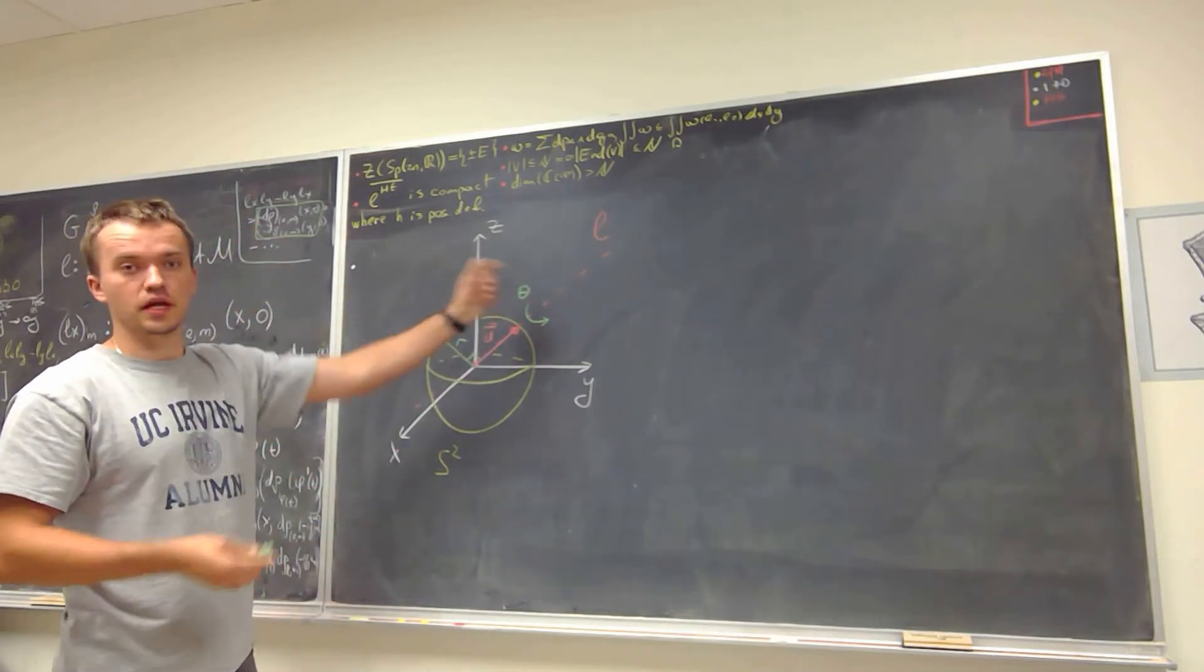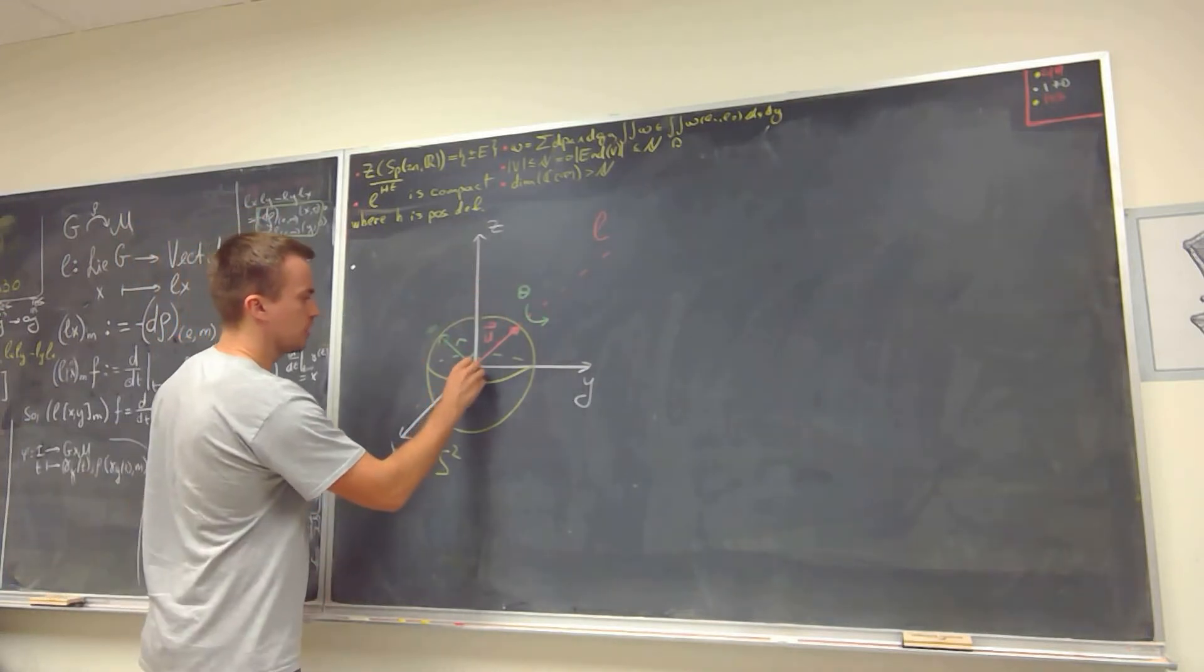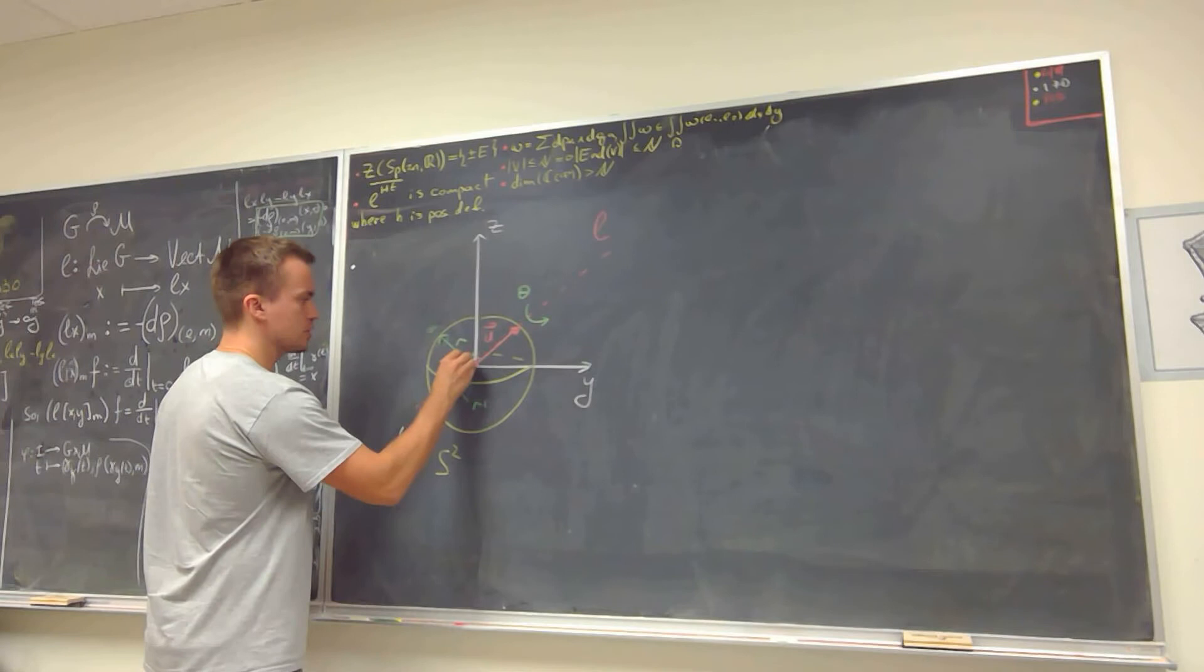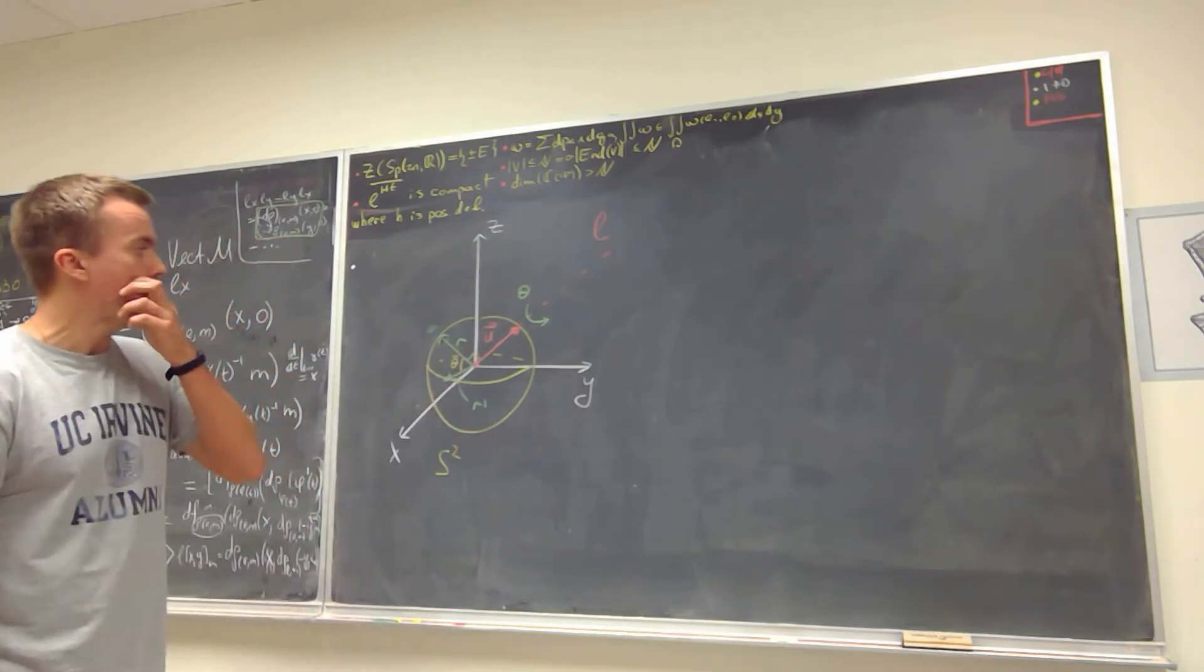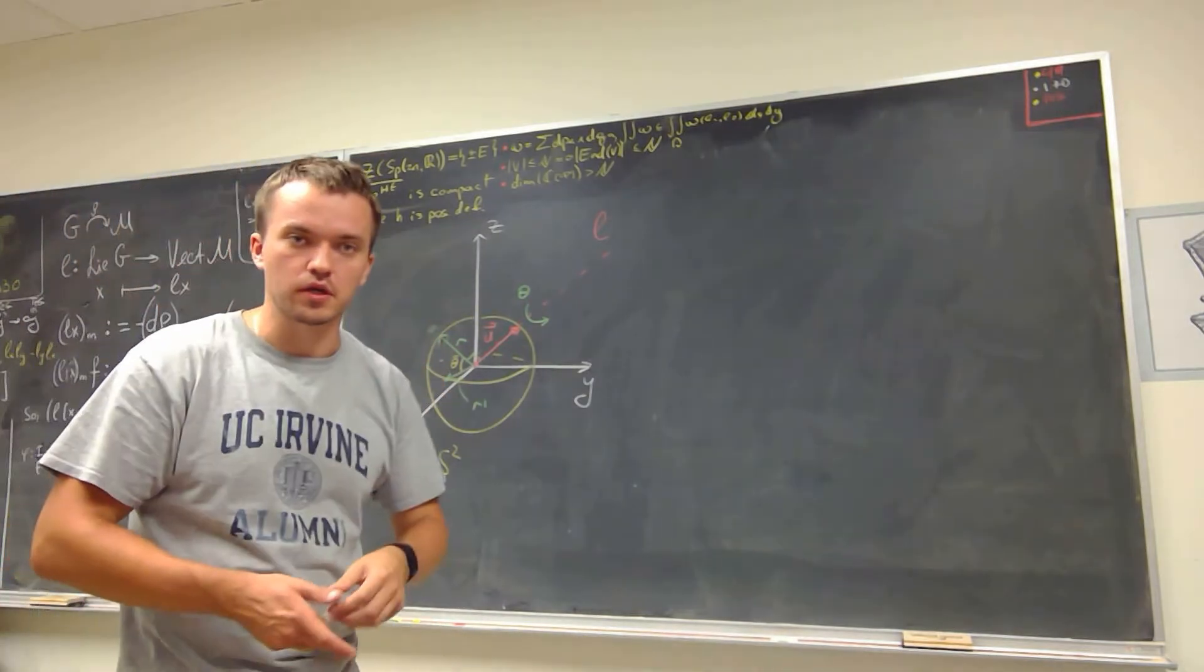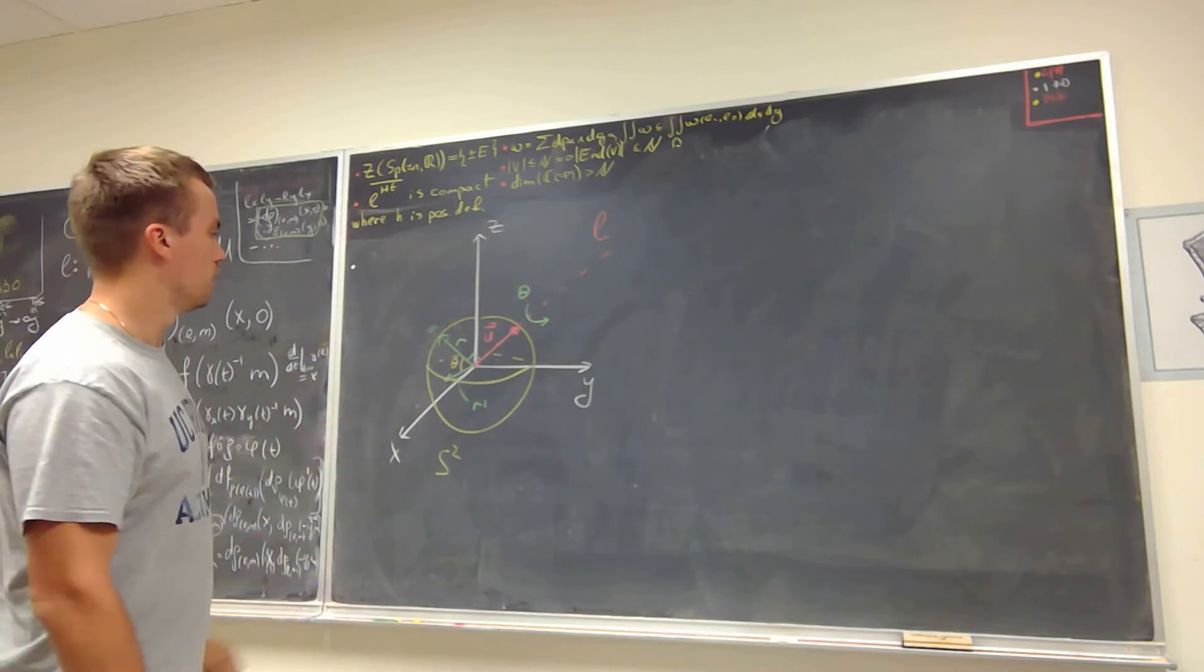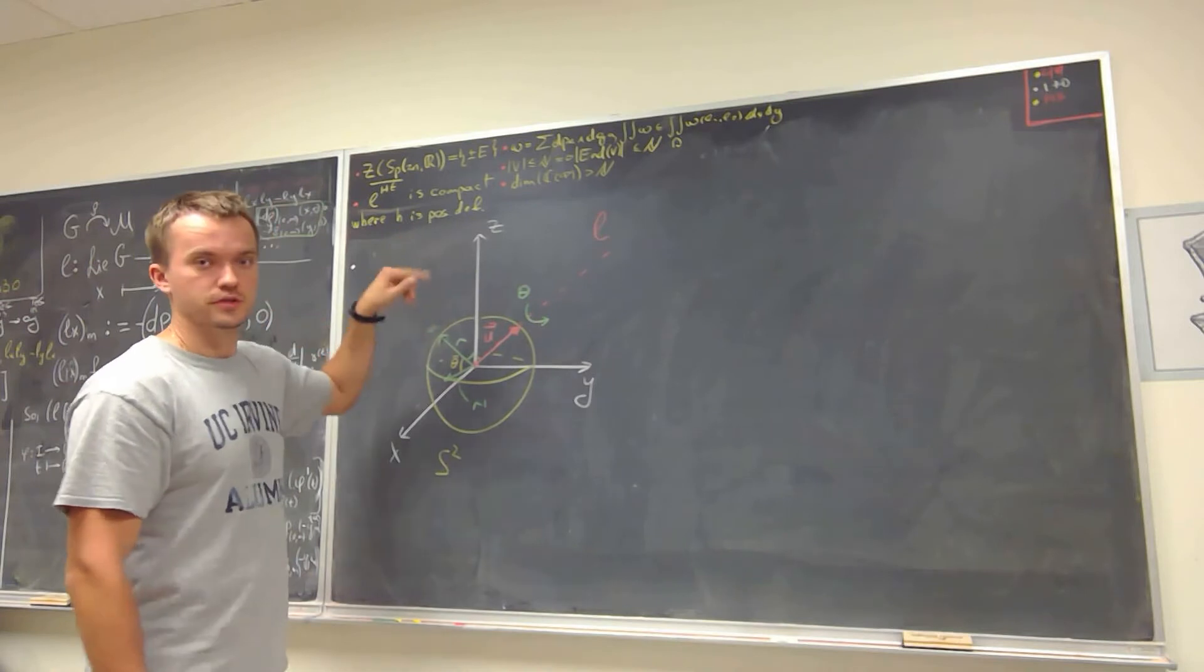Then when I'm going to rotate my three-dimensional space around this line l by angle theta, this vector r is going to get rotated to some vector r prime. And the angle of rotation here is going to be exactly theta. So all possible rotations are going to be in three-dimensional space.